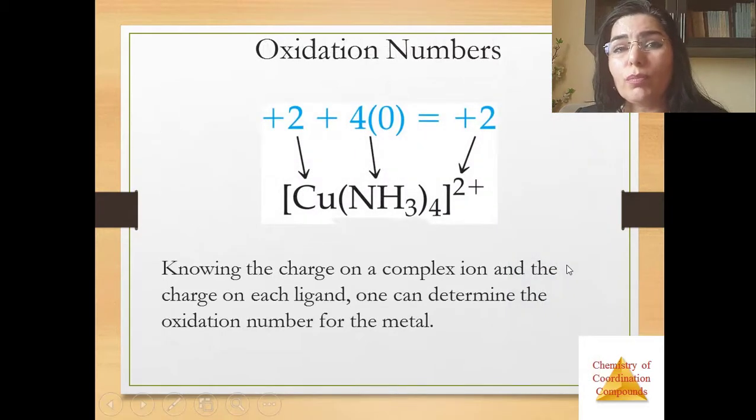Now about oxidation numbers. Knowing the charge on a complex ion and the charge on each ligand, one can determine the oxidation number for the metal. For example, for copper in this example oxidation number is plus two and for ammonia zero. From this number we can calculate oxidation number for complex ion, and when we calculate this expression we find a plus two oxidation number.